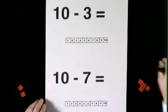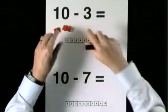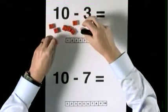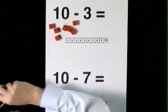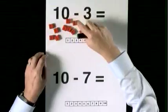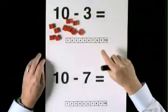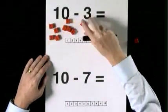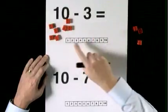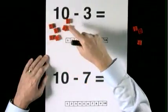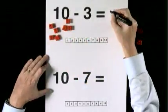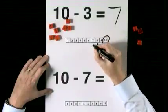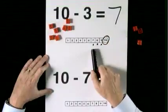Ten take three. Ten take three. Take one, take two, take three. Leaves one, two, three, four, five, six, seven. Ten take one, two, three makes seven.